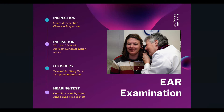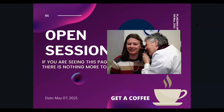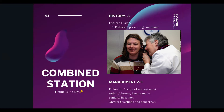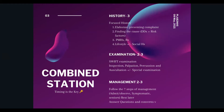Second is palpation of the pinna, mastoid, and pre/post auricular lymph nodes. Third is otoscopy, examining the external auditory canal and then the tympanic membrane. Fourth is the hearing test — you may not get time for a full test, but there will usually be a tuning fork, so you conclude by saying you will complete with a full ENT examination and Rinne's and Weber's test.